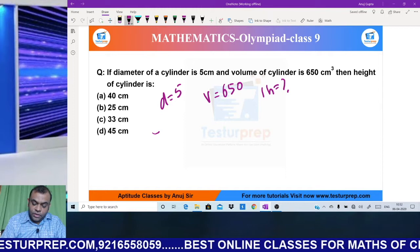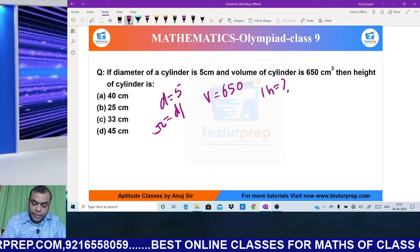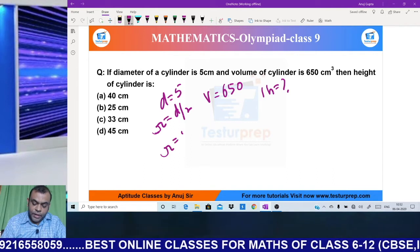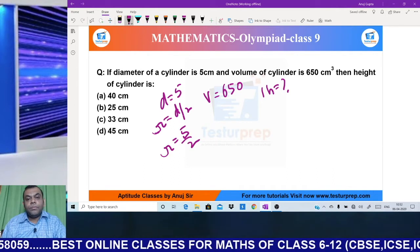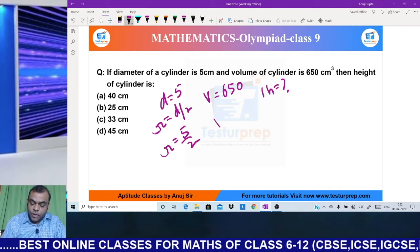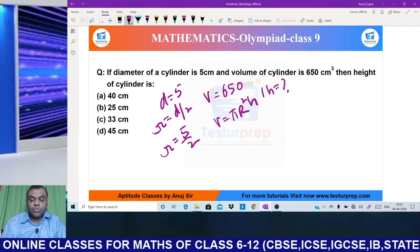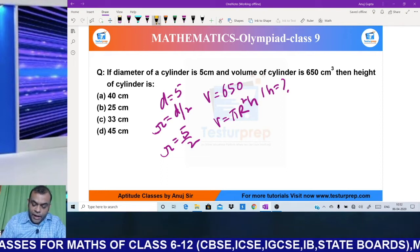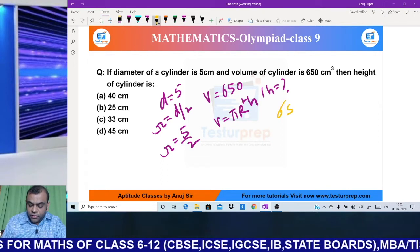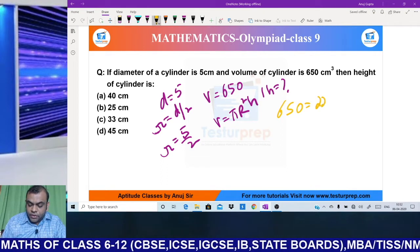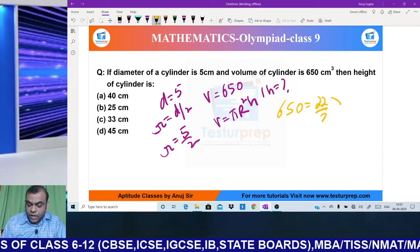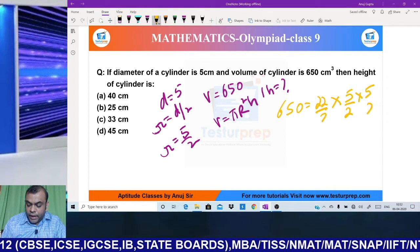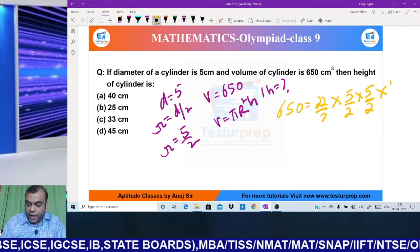Now we know that radius is half the diameter, so radius becomes 5 by 2. Volume of cylinder formula is π r² h. So putting the values in the formula: volume is 650, π is 22/7, radius is 5/2, and let us try to find the height.